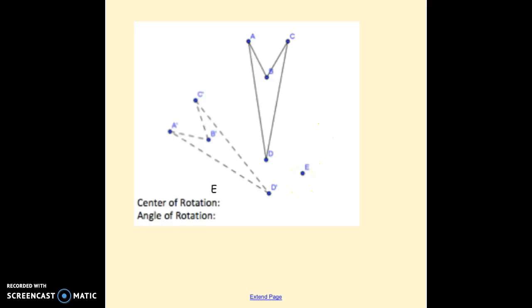I want to pick two points that are corresponding. I'm going to use A and A prime again. All I did here was connect from A to my center of rotation and from A prime to my center of rotation. Because remember, I said my center of rotation here was point E. Now I want to calculate the angle of rotation.